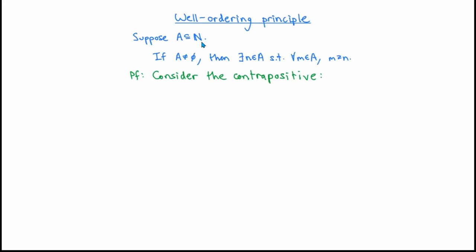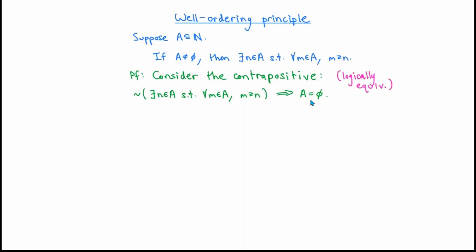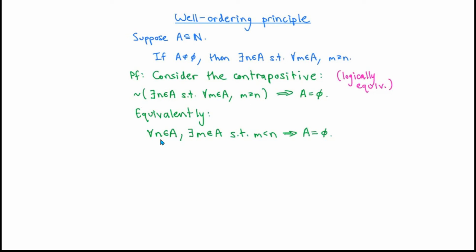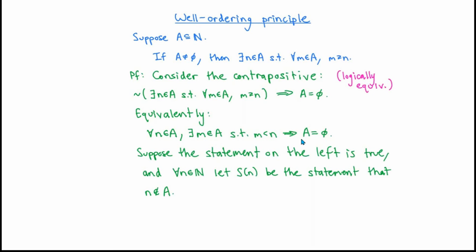This is a good exercise in proof writing, so I'd like to go through the argument. We're supposing that A is a subset of the natural numbers, and we're trying to prove the conditional statement: if A is not the empty set, then there exists an n in A such that for every m in A, m is bigger than or equal to n. Let's start by looking at the contrapositive of this conditional statement. The contrapositive is simply the statement that if the negation of the second part is true, then the negation of the first part is true. We know from our video about logical statements that a conditional statement and its contrapositive are logically equivalent, so if we prove the contrapositive is true, that will establish the well-ordering principle.